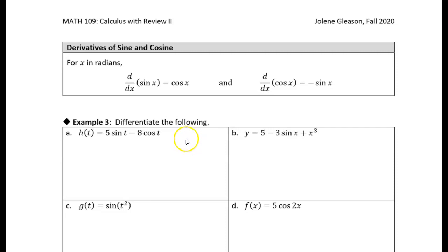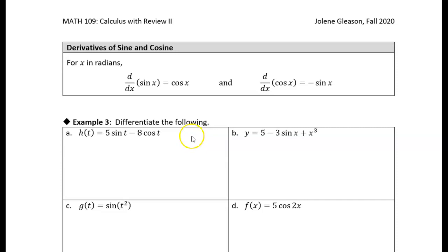Here's the result: the derivative of sine is cosine, and the derivative of cosine is negative sine. We're going to add those to our list of derivatives of basic functions. So we have a whole repertoire of basic functions we can differentiate, like a power function, an exponential function, a logarithm, and now we can take the derivative of sine and cosine.